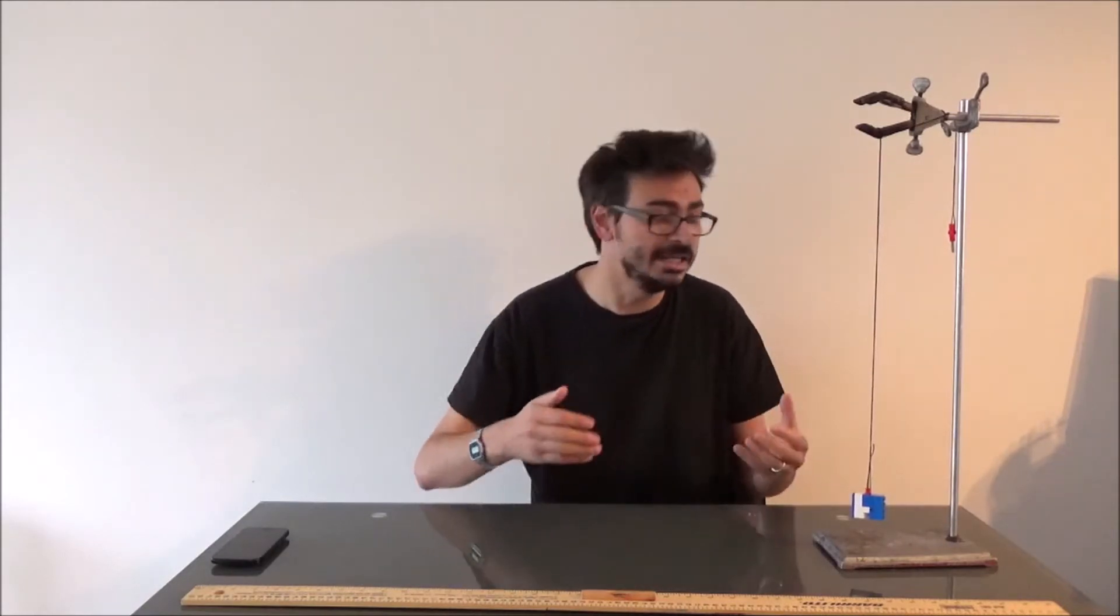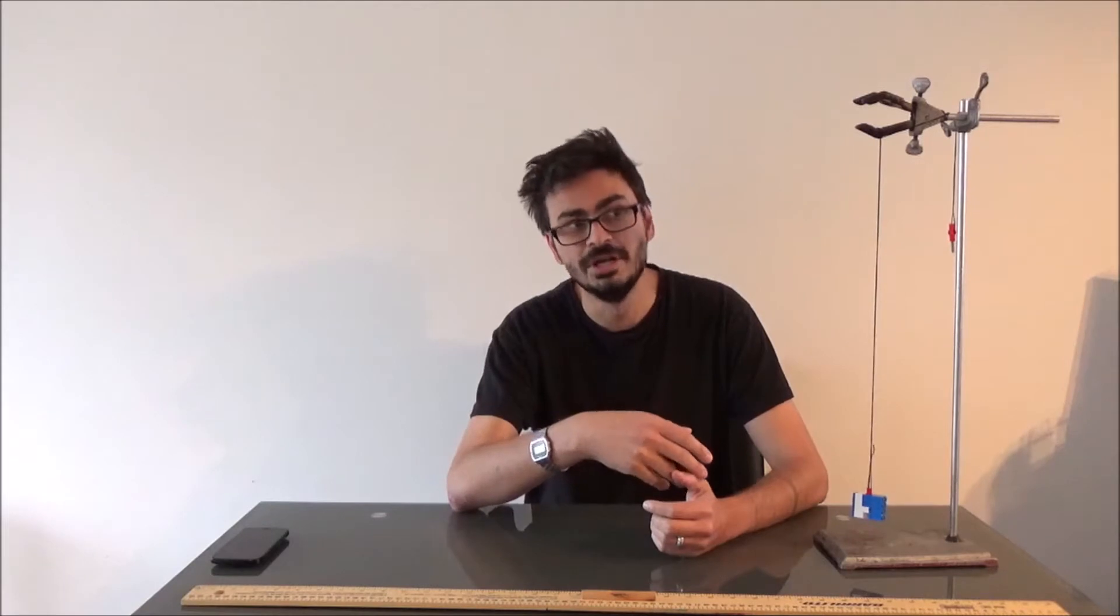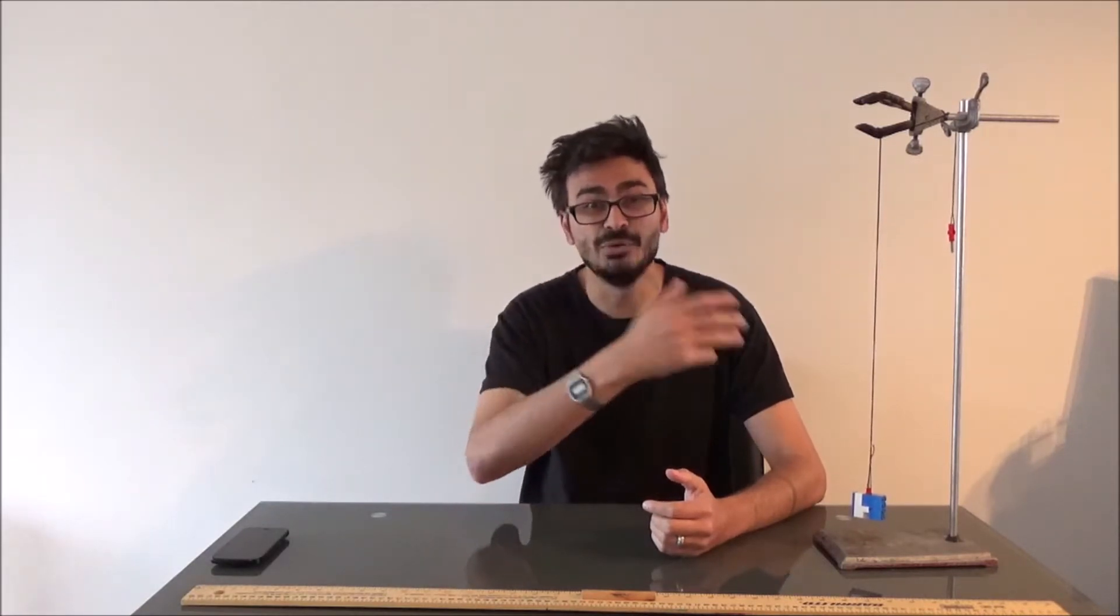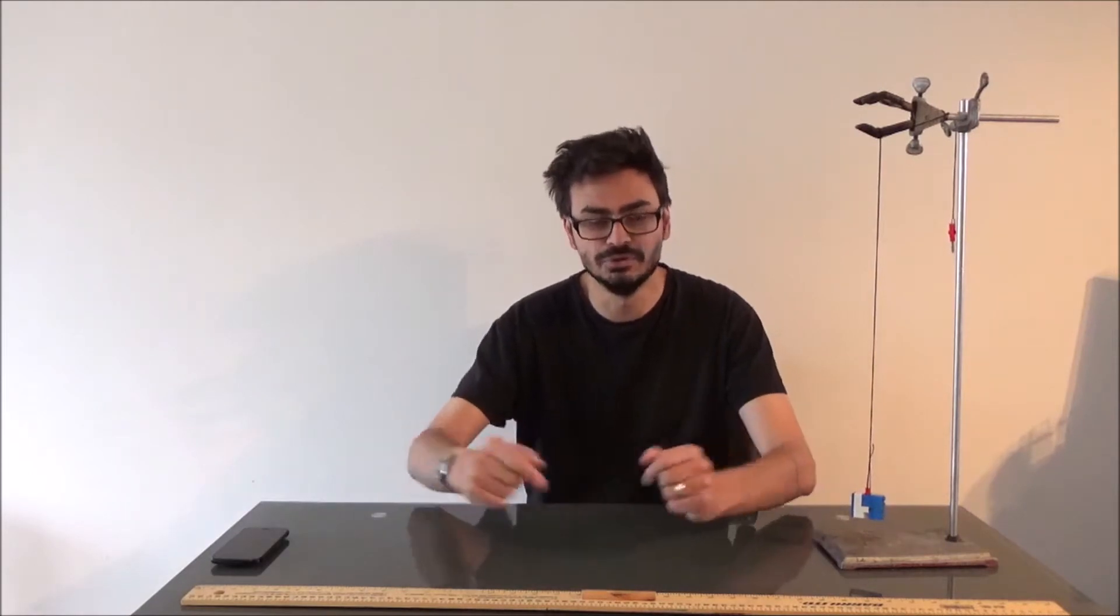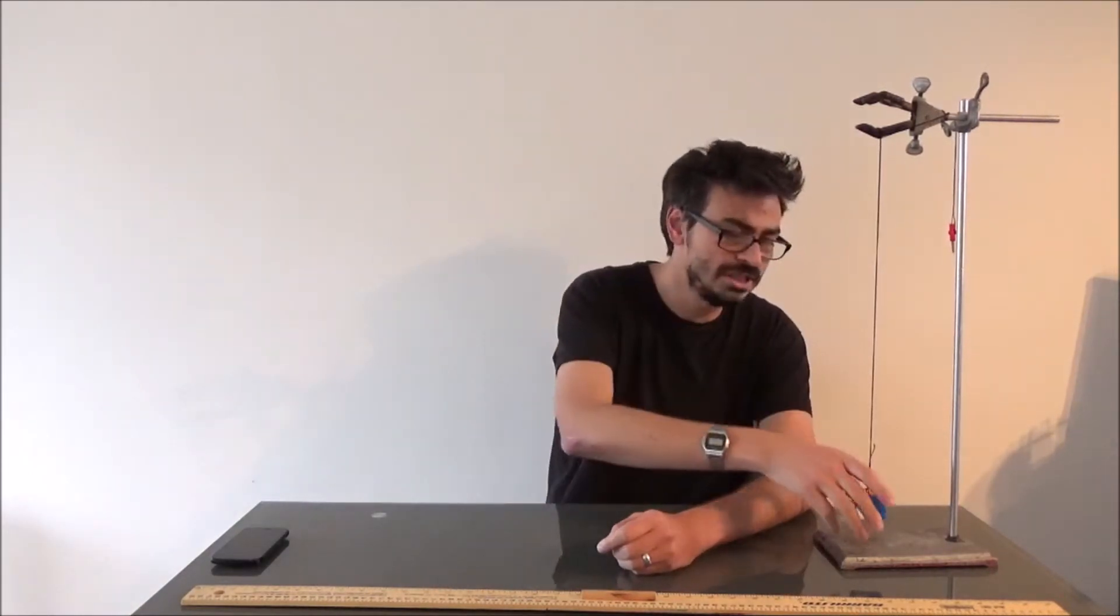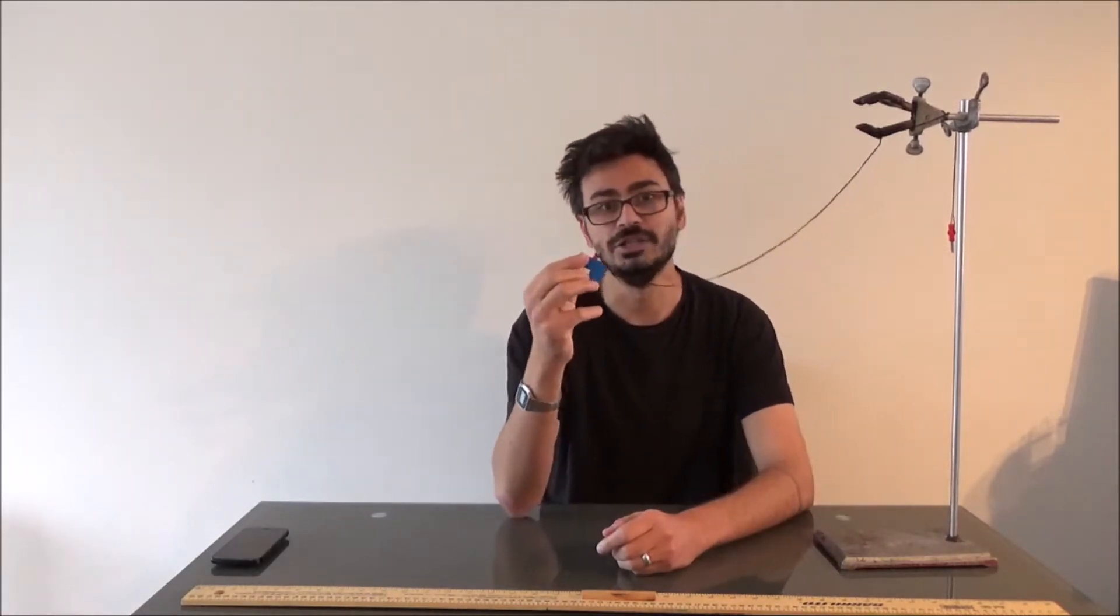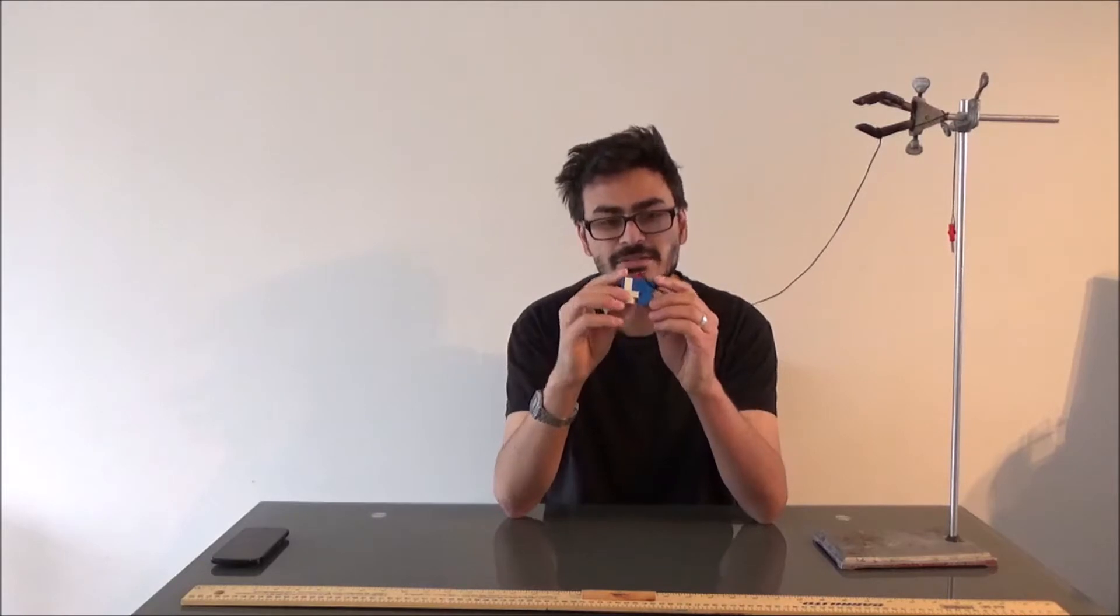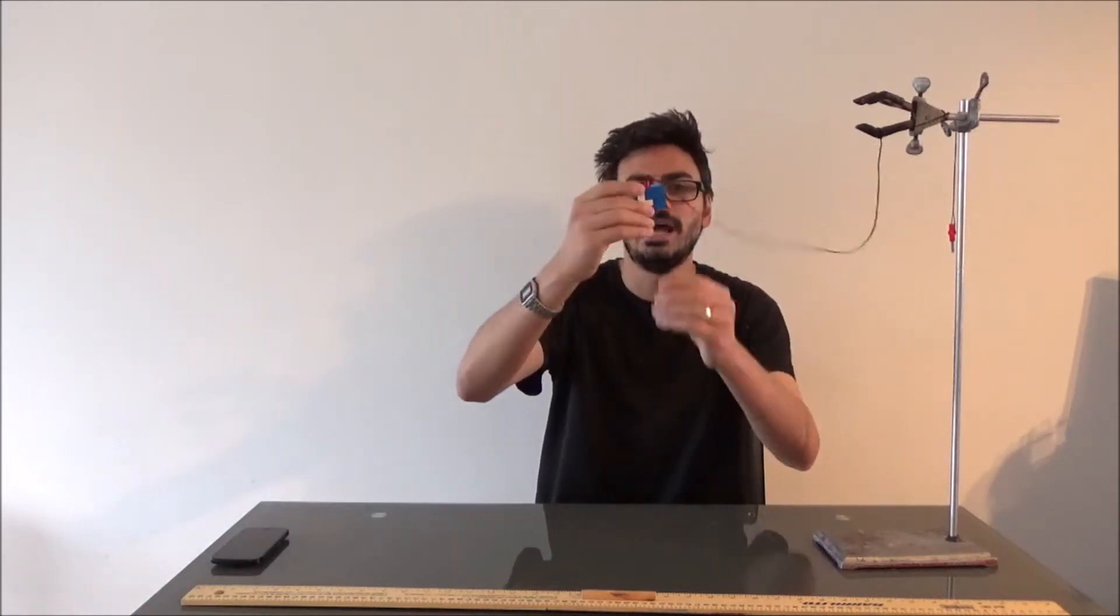And this is really good for people beginning physics courses because that means that we can design an experiment, look at a true value and see how good our experiment was, and then try and see if we can suggest some realistic improvements for it. Now, normally when I would teach this in school, I would have a retort stand and I would have a length of string and I would have a stopwatch with me and I'd have a pendulum. Now, I don't have a pendulum with me today, so what I've done is made a quick little pendulum bob out of some Lego.